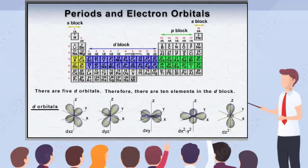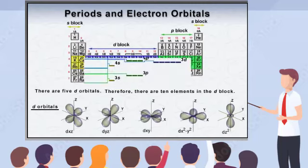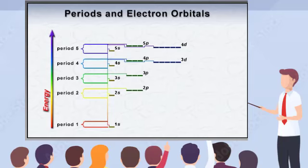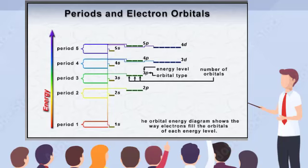It's important to note, in determining electron configurations, that electrons in the D orbitals are not valence electrons, though they are occasionally involved in bonding. As you can see in the energy diagram, which shows the way electrons fill orbitals, D orbitals in each period actually belong to the preceding lower energy level.